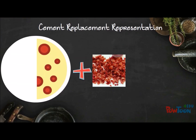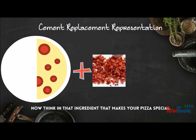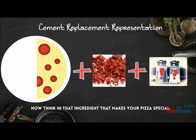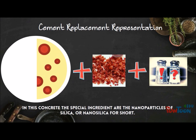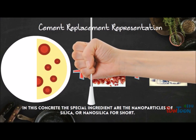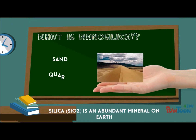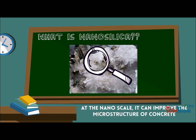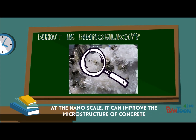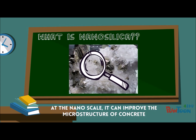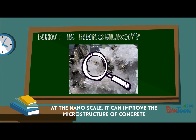Now think of that ingredient that makes your pizza special. In this concrete, the special ingredient are the nanoparticles of silica, or nano-silica for short. Silica is an abundant mineral on earth and can be found in things like sand and quartz. At the nano scale, it can improve the microstructure of concrete.